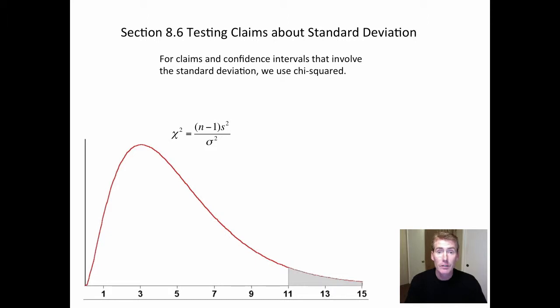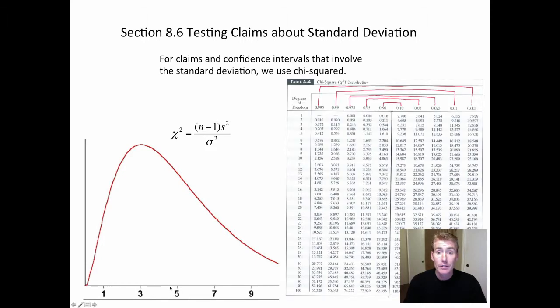Another thing to remember is chi-squared is not symmetric. So you'll have to look up the right tail and the left tail separately, and also there are no negatives. They're all positive values. And we're going to use table A4. As you may remember, I split mine in half where this is going to be the right tails, and these are going to be the left tail critical values. All right. So let's get started.